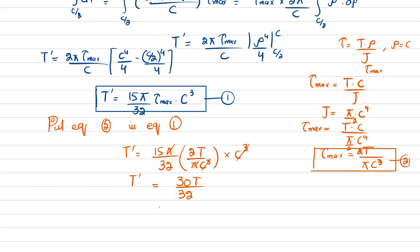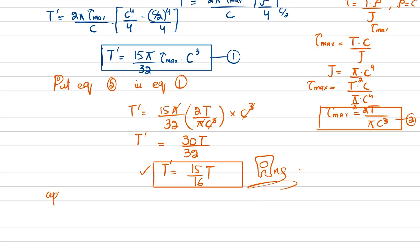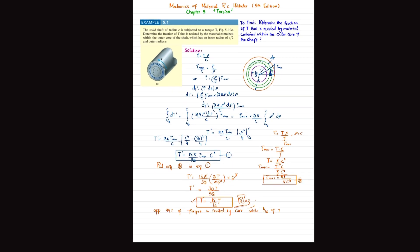Therefore T' = (15/16)·T, where T is the total torque applied to the solid shaft. This means approximately 94% of the torque is resisted by the outer core, while only 1/16 of the torque is resisted by the inner core. This shows that material located at the outer region is highly effective in resisting torque, which justifies the use of tubular shafts as an efficient means of transmitting torque while saving material.